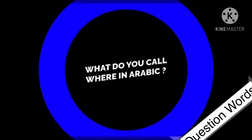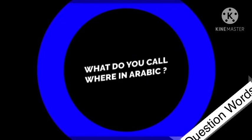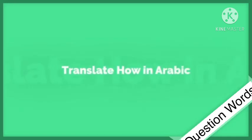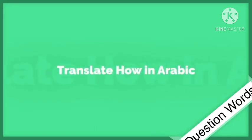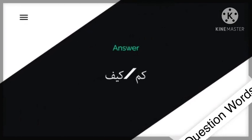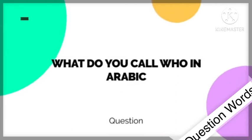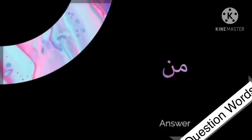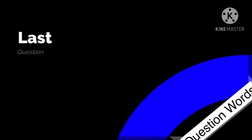First question: what do you call 'where' in Arabic? The answer is 'ayna.' Let's repeat: 'ayna.' Next question: translate 'how' in Arabic. The answer is 'kam' or 'kaifa.' Next: what do you call 'who' in Arabic? The answer is 'man.' Let's repeat: 'man.'